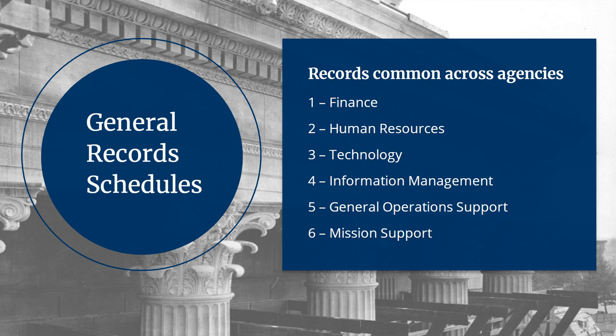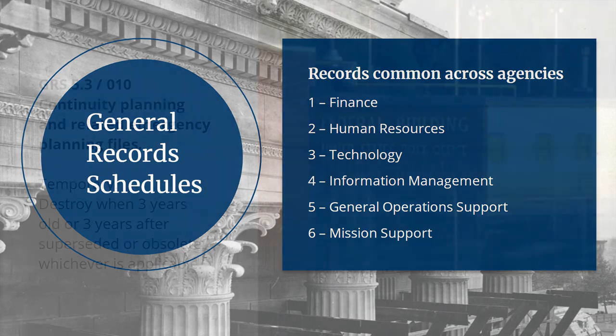General Record Schedules cover records common across agencies, organized into six categories: 1. Finance, 2. Human Resources, 3. Technology, 4. Information Management, 5. General Operations Support, and 6. Mission Support.